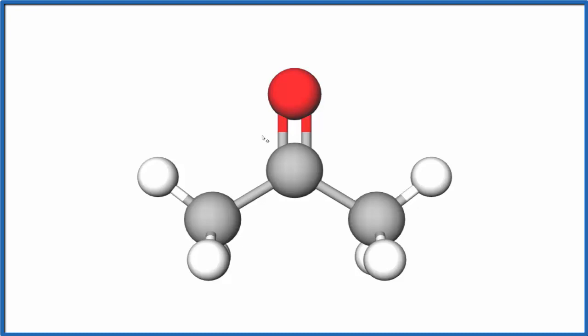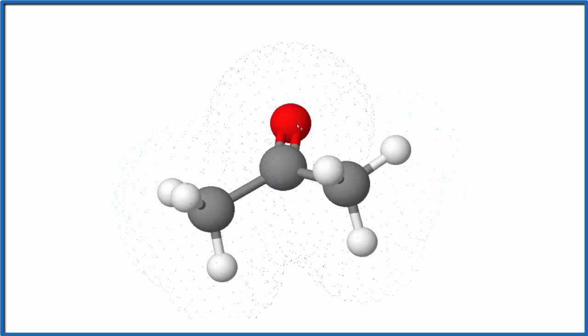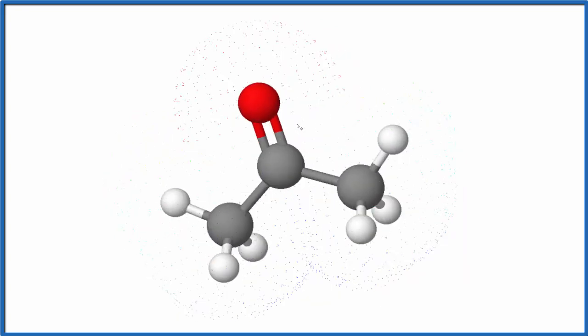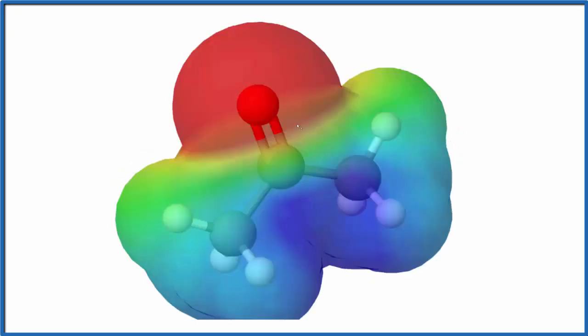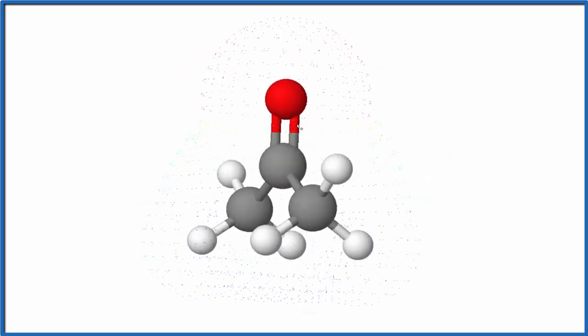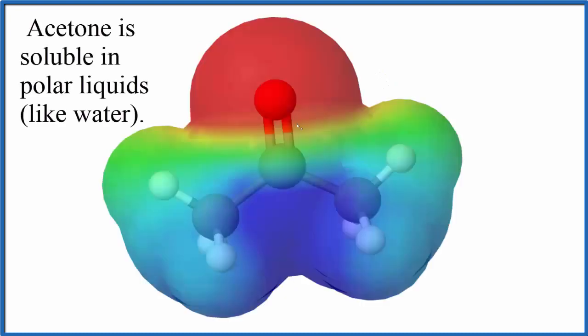If we look at the surface showing that difference in polarity, you can see the red is more negative and then the bluish down here, that's more positive. So we do have a polar molecule because we have this negative and positive pole. Because of that, since water is also polar, acetone will be soluble in water.